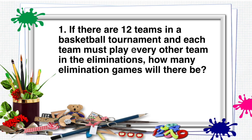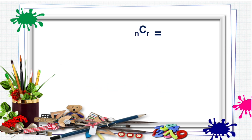Problem number 1. If there are 12 teams in a basketball tournament and each team must play every other team in the eliminations, how many elimination games will there be? In this problem, N is equal to 12 teams and R is equal to 2 teams that will play inside the court. The formula is: combination of N objects taken R at a time is equal to N factorial divided by the product of the quantity N minus R factorial and R factorial.